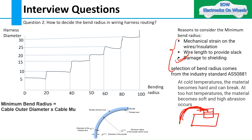Now, what are the different standards? The standard AS 50881 is used in the aerospace industry. In car manufacturing or commercial vehicle manufacturing it might be different, but in aerospace this is the standard — AS 50881. You can check what standards other industries use and comment in the comment box. Selection of bend radius comes from this industry standard.